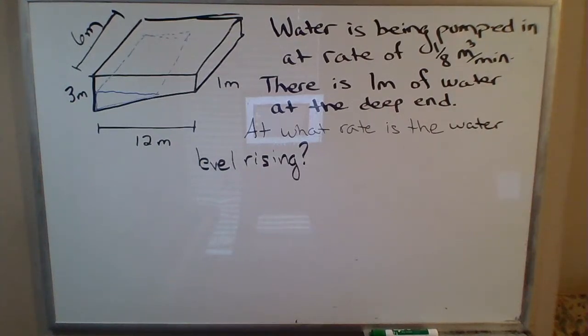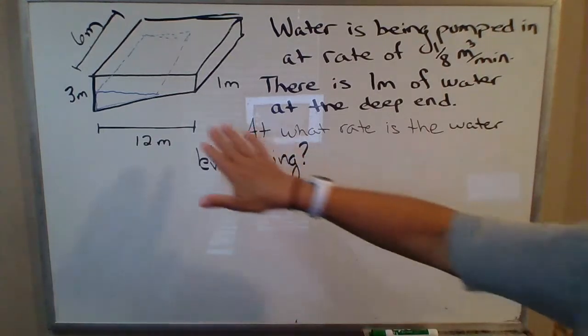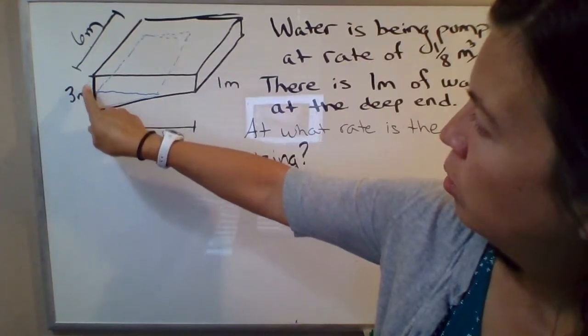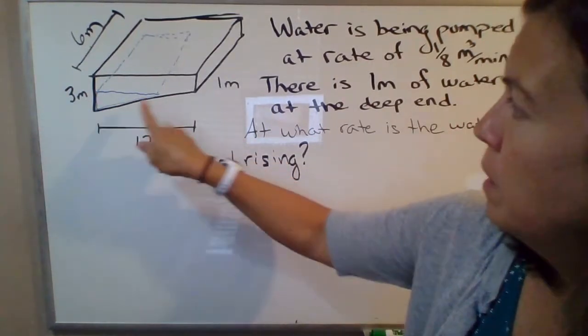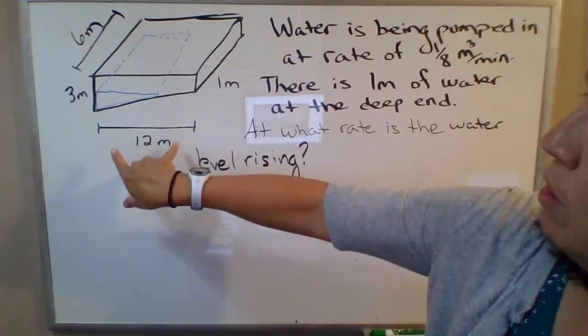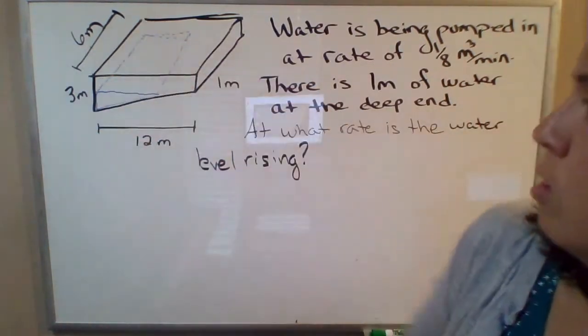This is a problem from your homework that I was asked to solve in which you have a pool in this shape here. So it's three meters deep at the deep end, one meter deep at the shallow end over here, 12 meters across this way, six meters across this way.